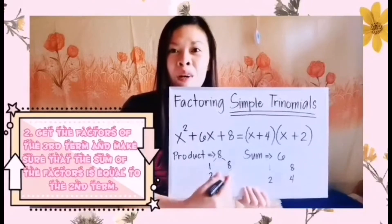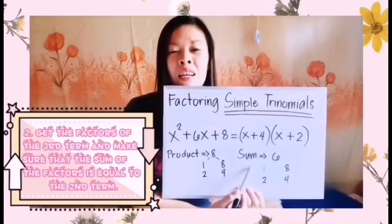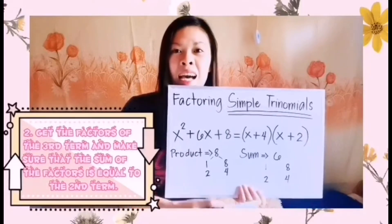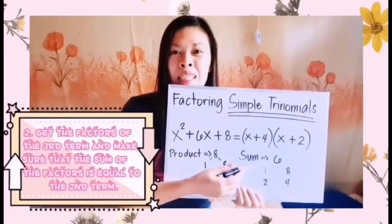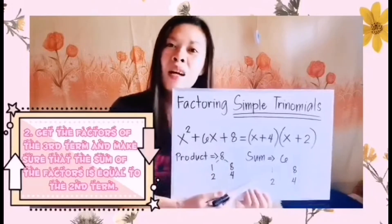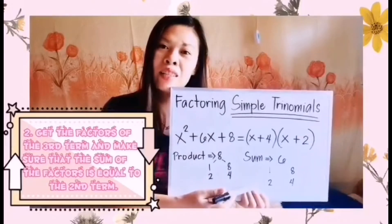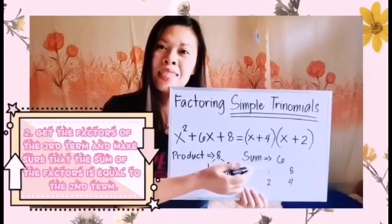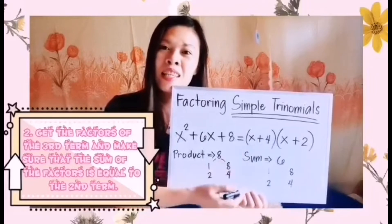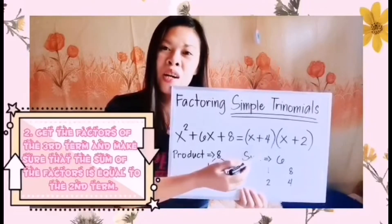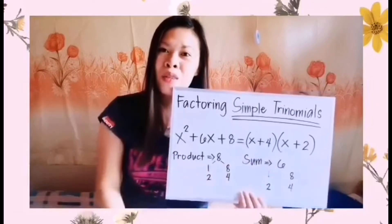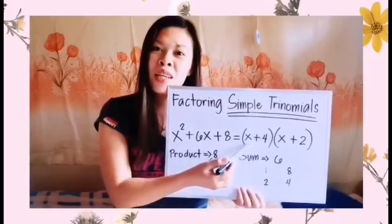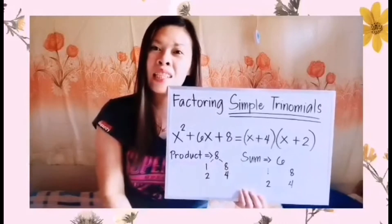To get our final answer, we make sure the sum of these factors equals the numerical coefficient of our second term, which is positive 6. The sum of 1 plus 8 equals 9 — not 6. But 2 plus 4 equals 6. Therefore, we copy those: positive 4 and positive 2, giving us the factors: quantity of x plus 4 times quantity of x plus 2.